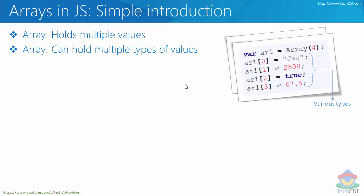This is a bit different from C, C++, or C# - in other languages you can always have an array of a particular data type, but here in JavaScript things are different. You can have a string, an integer, a boolean, or a floating point value - all of those particular values can go into the same array. So an array doesn't really need to be confined to a specific data type; the values can be of various different types.